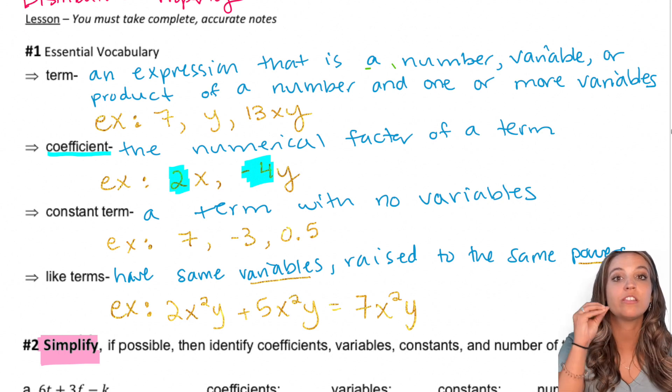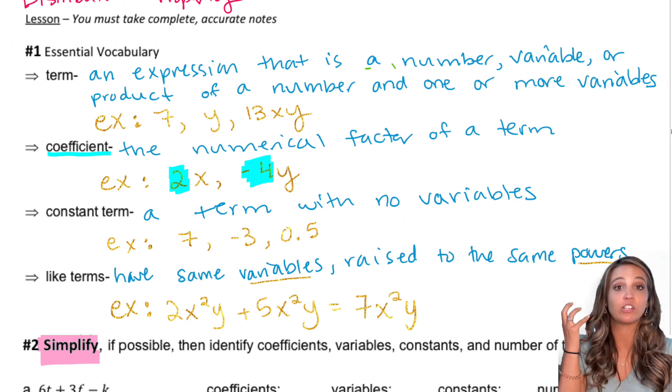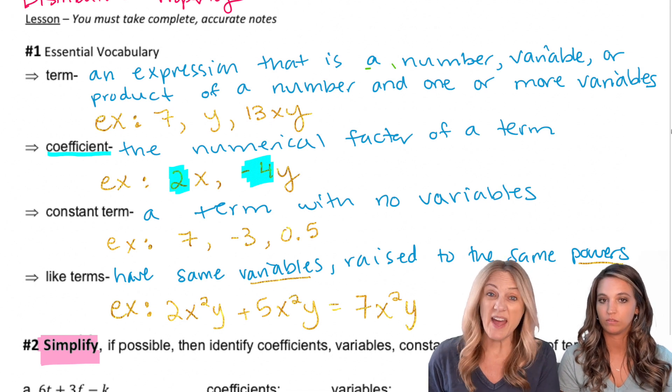Like terms have the same variables raised to the same power. So 2x²y plus 5x²y—same variable, same power. 2xy plus 5x²y are not the same and would not be able to be combined.